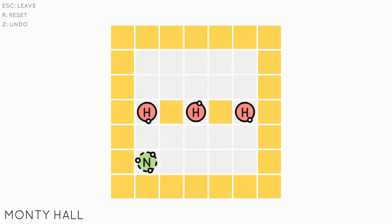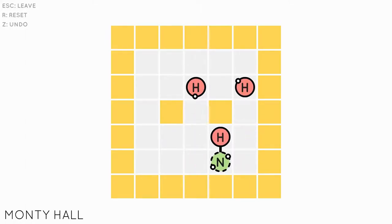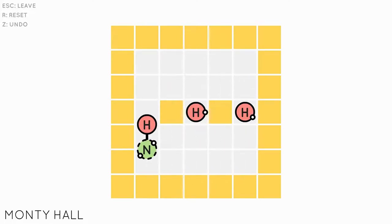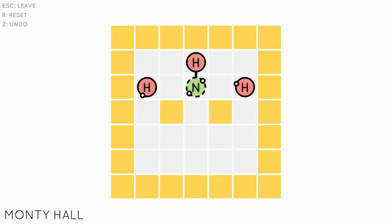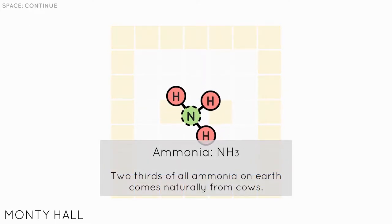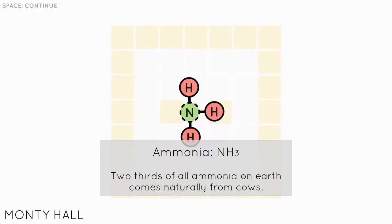So what can I do? I can do this and then we can bump this one up. I think that's how you do it. Oh no I messed up. At least I think I know how to do this now. Yeah this is how you do it. So we have ammonia NH3. Two-thirds of all ammonia on earth comes naturally from cows. I did not know that. I don't know if that's true but that is pretty cool if it is.